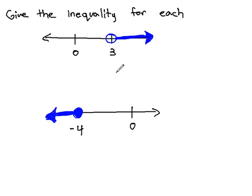This inequality starts at 3 and goes bigger to greater values. This means we want the x to be greater than that number 3. Because it's an open circle, we don't need anything else but just greater than 3. This is the inequality represented by the graph.